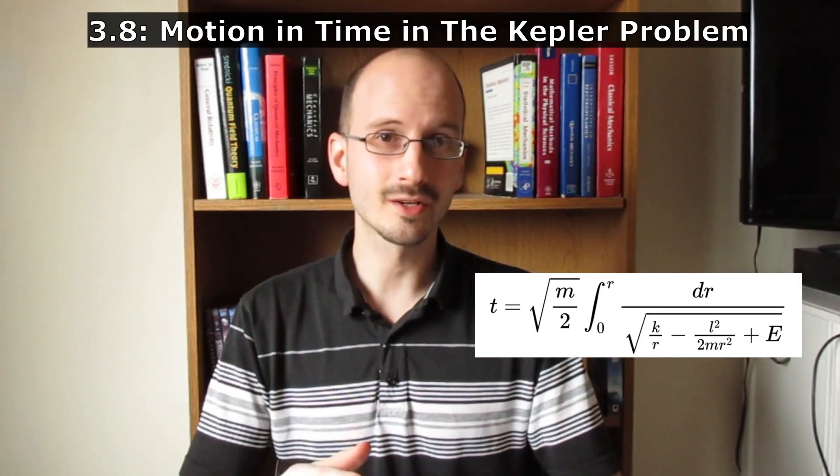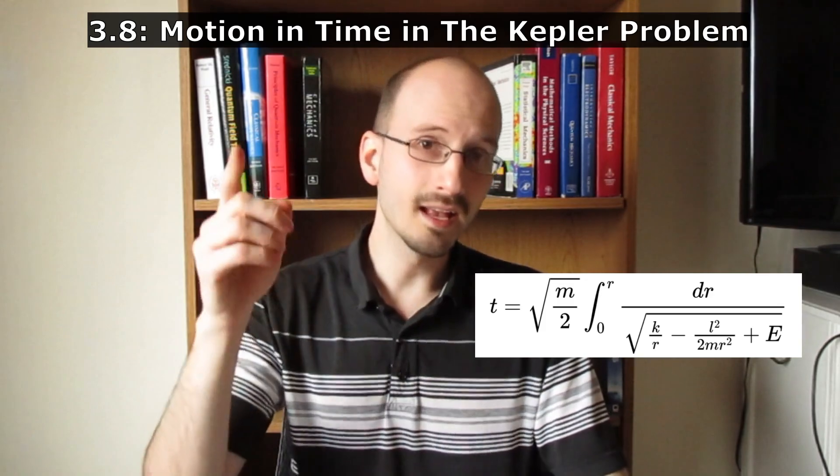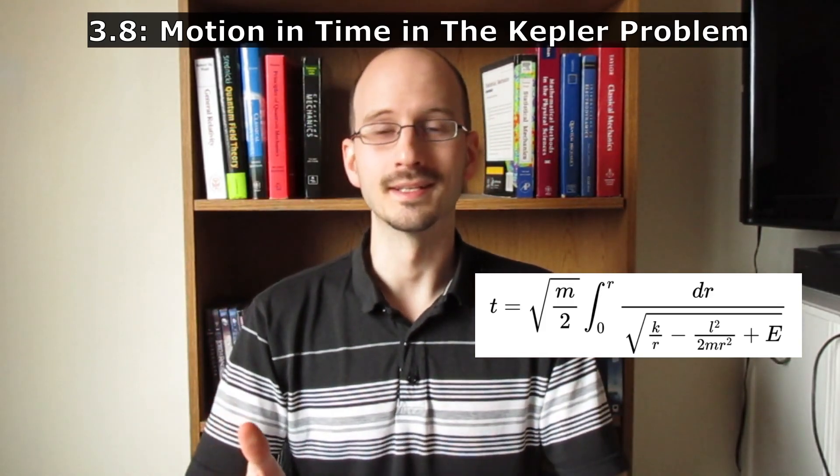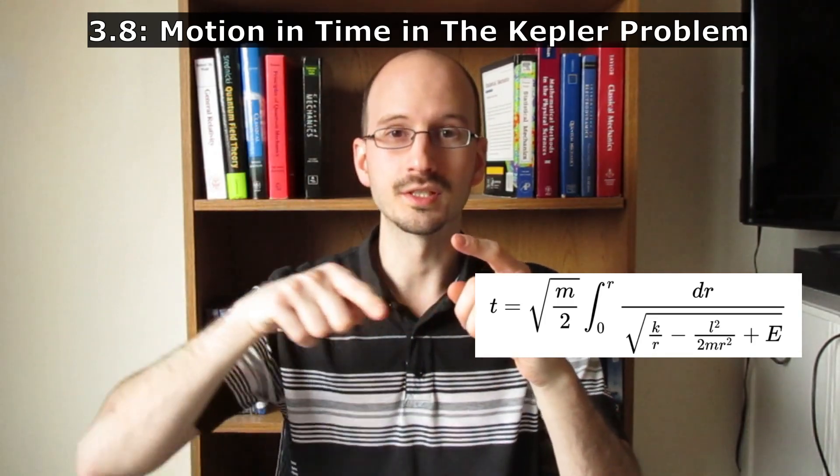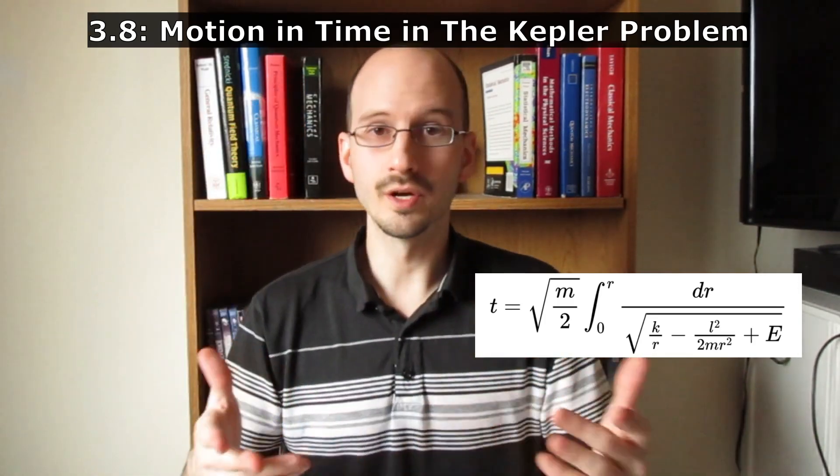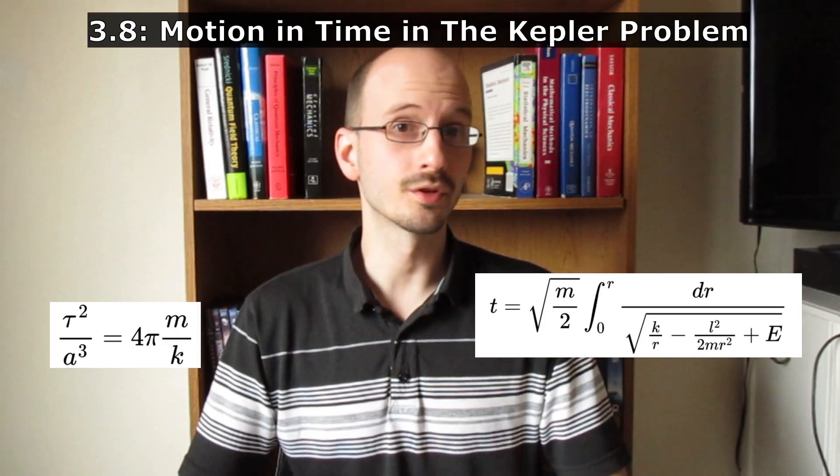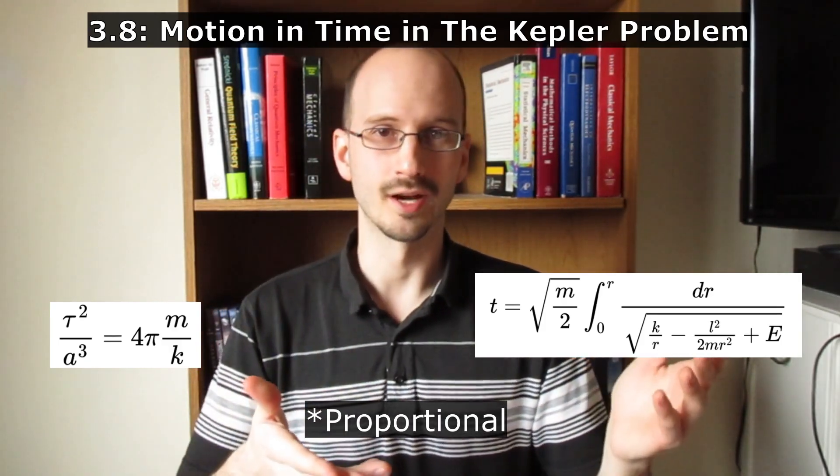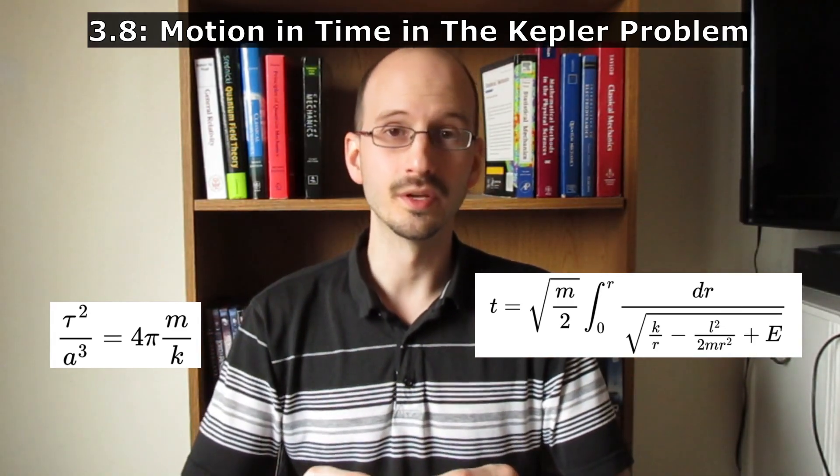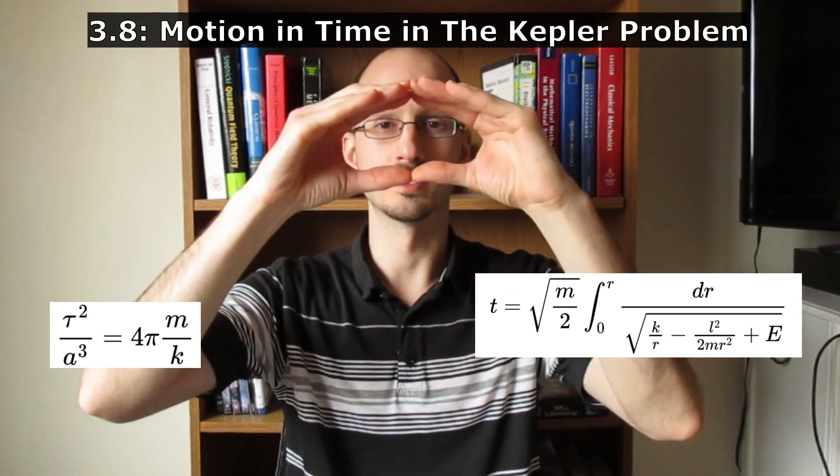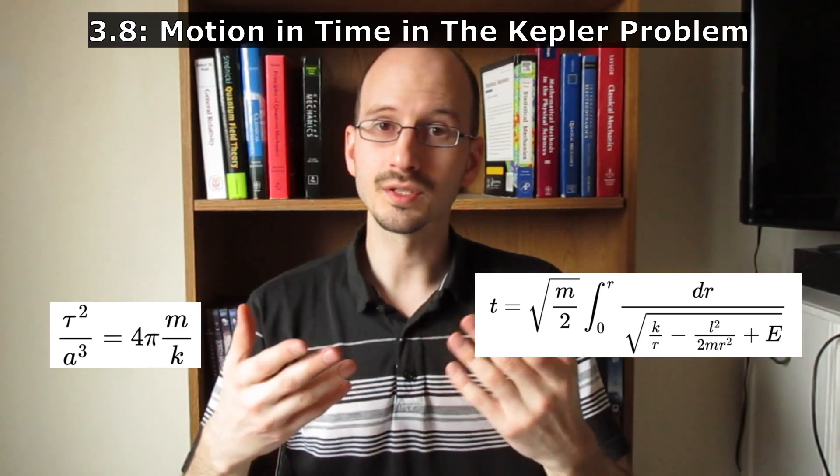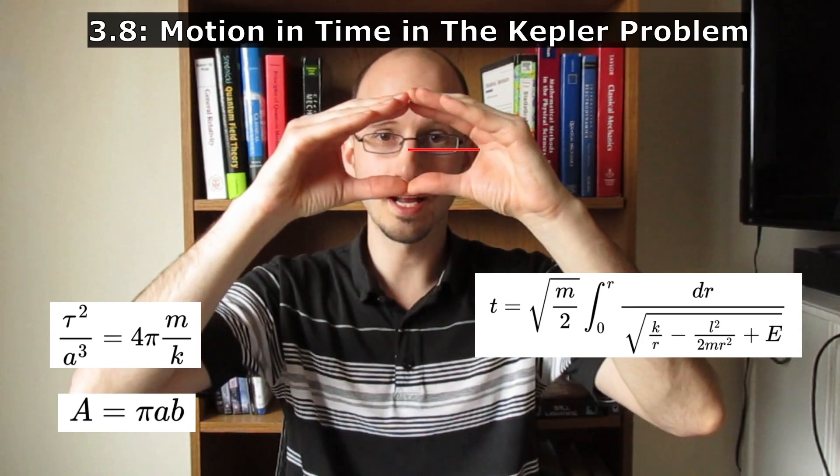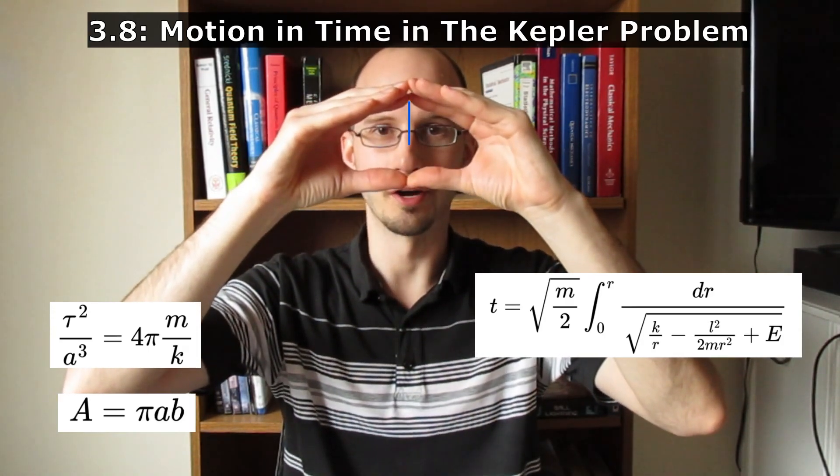By substituting in the conic section equation for r and integrating over the angle, we can find the period of revolution, the time it takes for an object to get back to its starting point. The equation we get is Kepler's third law. The period squared is equal to the semi-major axis cubed. Semi-major axis, if you don't know, is half of the long distance across the ellipse. They also calculate the area, which is pi times the semi-major axis times the semi-minor axis.